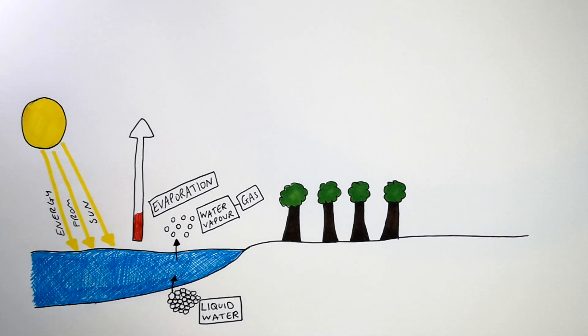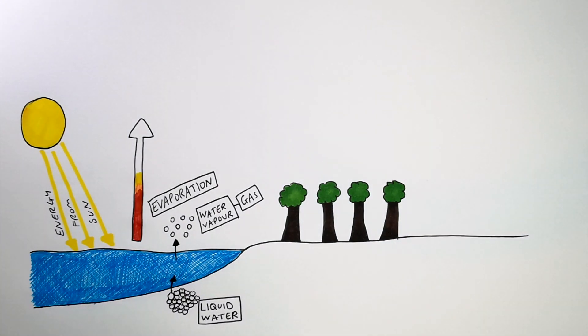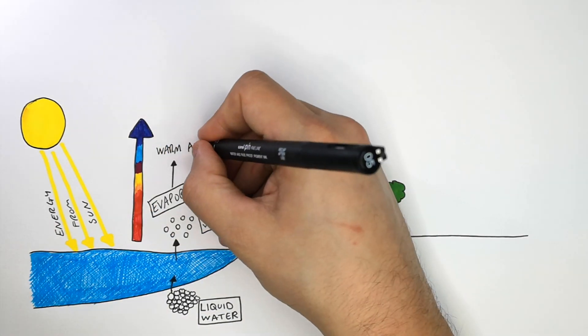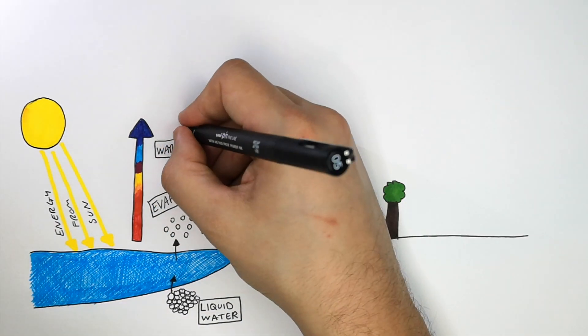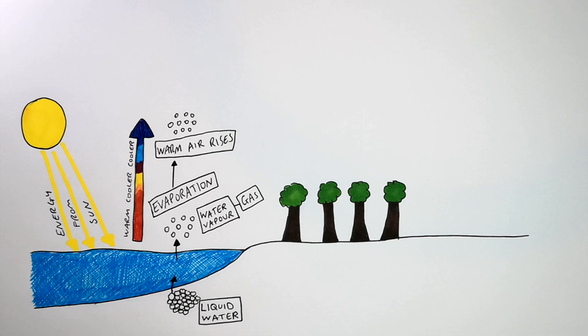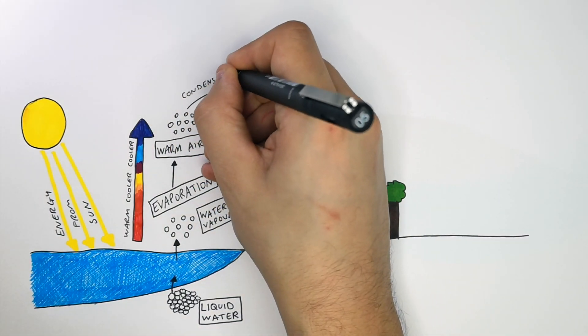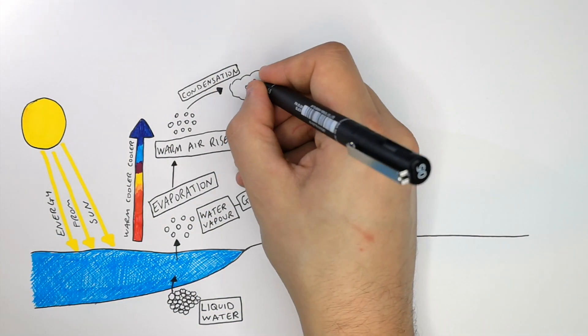This arrow here shows how the temperature cools as you increase the altitude away from sea level. So it cools. What happens is warm air rises, so the evaporated water from the seas and oceans will rise. And as they rise to cooler altitudes, warm air will condense as it cools. It will condense into liquid water.